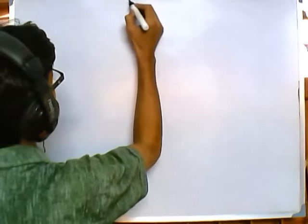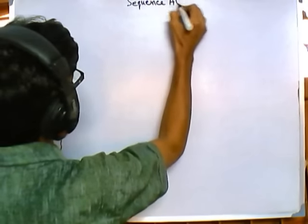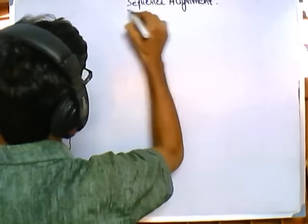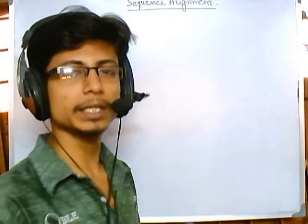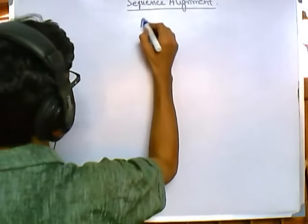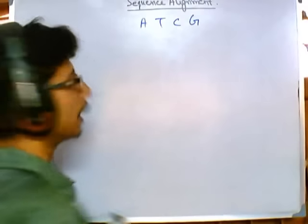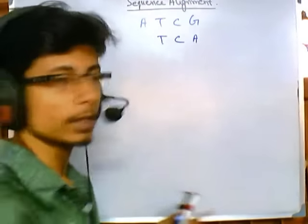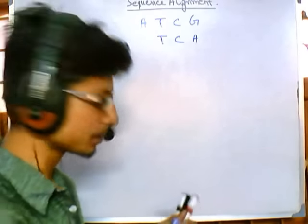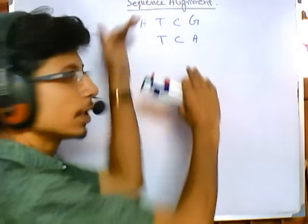What is sequence alignment? Sequence alignment, as the term suggests, is the alignment of two or more sequences. The sequence alignment we are going to study involves two sequences — for example, amino acid sequences or nucleic acid sequences. We will take nucleic acid sequences as an example: say ATCG and another one, TCA. These are the two sequences that we need to align.